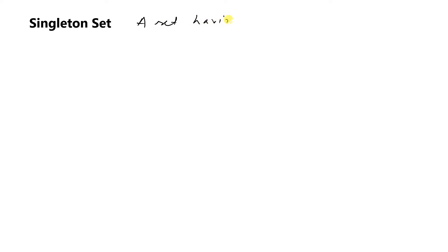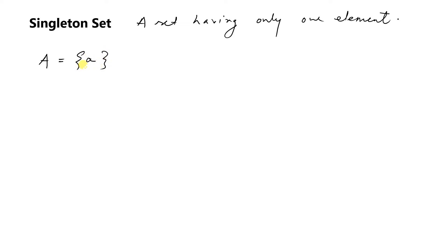Next is the singleton set. A set having only one element is called a singleton set. For example, set A containing only one element — small a — is a singleton set. The cardinality of A is one, and the cardinality of the empty set phi is zero. Cardinality means the number of elements in the set.